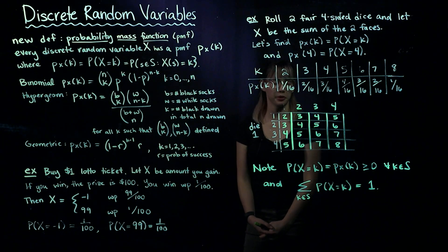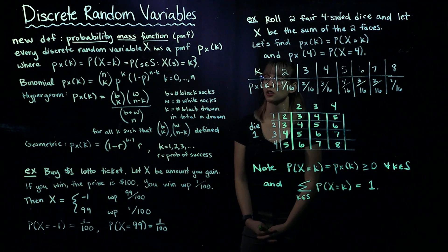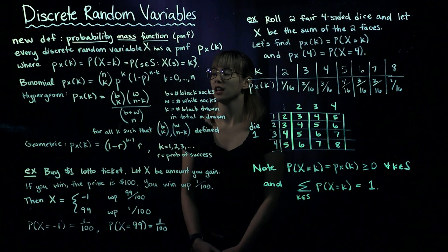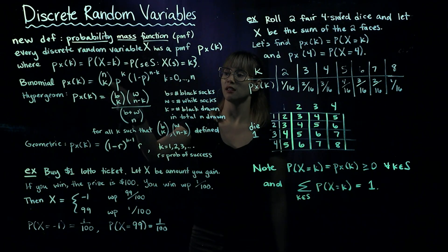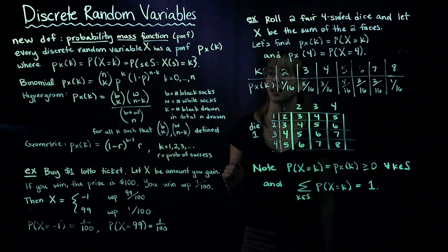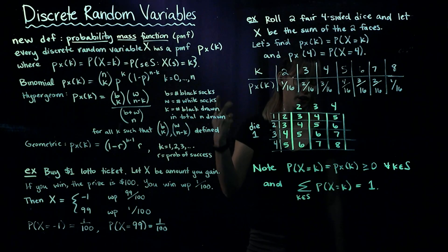We've seen probability mass functions before without describing them as such. For example, the binomial distribution has PMF: N choose K times probability of success to the K times probability of failure to the N minus K. This holds for K from zero to N.